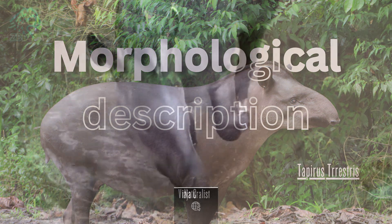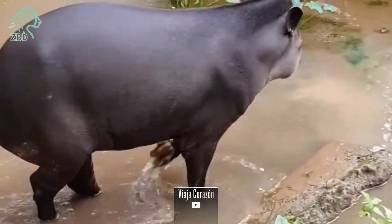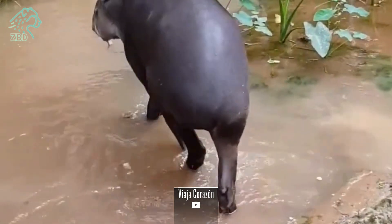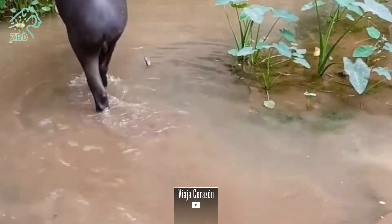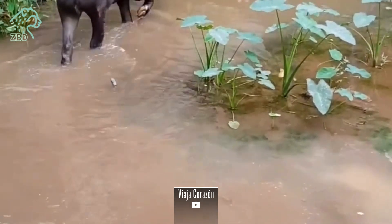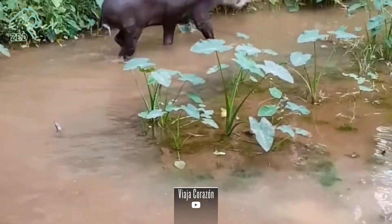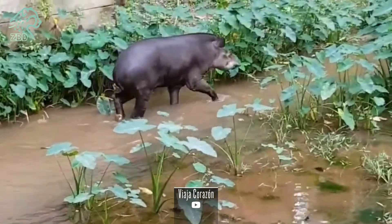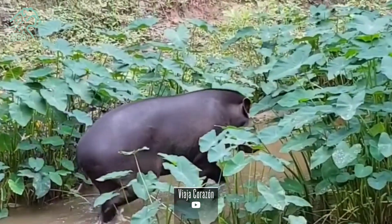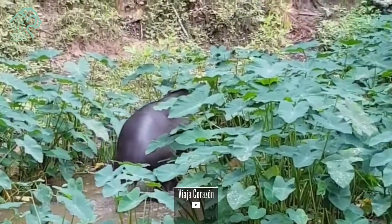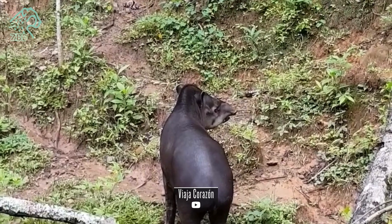Tapirs comprise four extant species under the Tapirus genus across Latin America and Southeast Asia, in addition to the recently extinct Chinese mountain tapir. Though varying in specific coat patterns and regional size adaptations, all tapir species share a number of common morphological traits, including a sloping back profile with a low shoulder height, rounded rump, and elevated hindquarters. Short and stout legs support a large barrel-shaped torso weighing 200 to 700 pounds depending on the species.